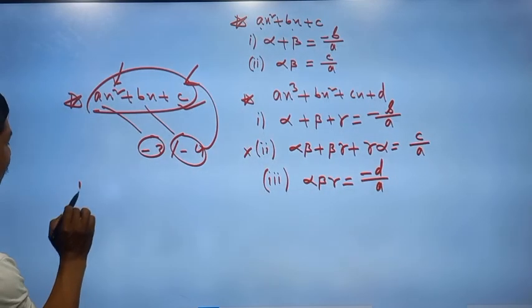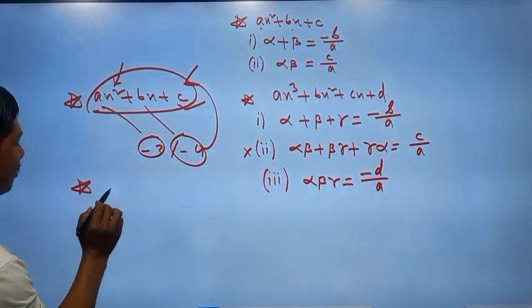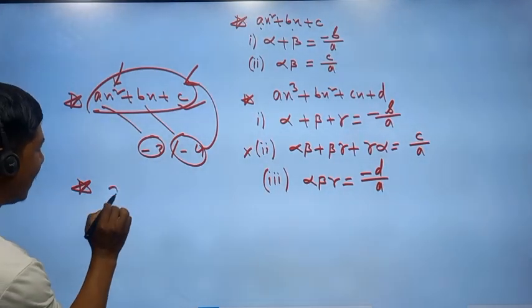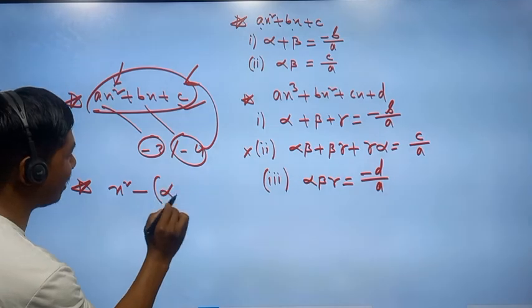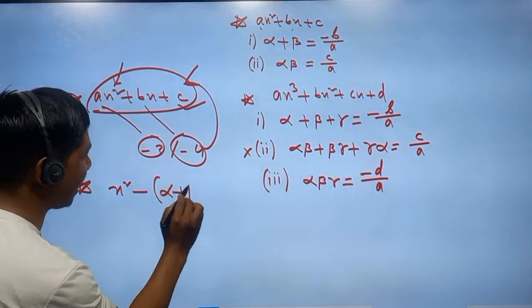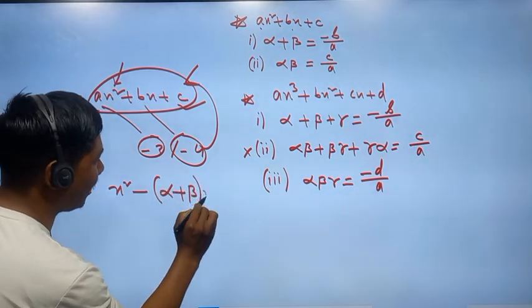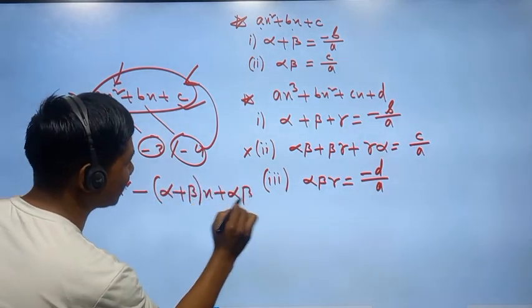We can make x squared minus (alpha plus beta) times x, plus alpha beta.